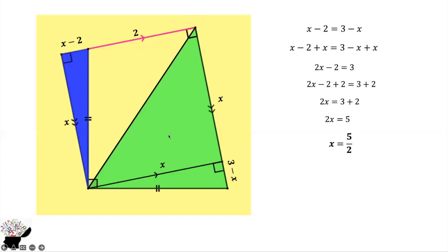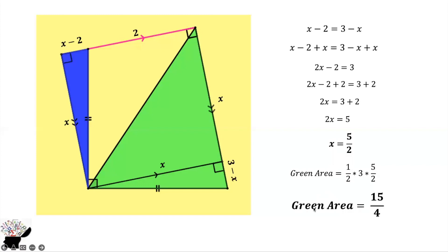The side length of the square is 5 over 2. Now we can find the area of the green triangle. Area equals half base times perpendicular height. The perpendicular height equals the side length of the square, which is 5 over 2. So the area is half times 3 times 5 over 2, giving us 15 over 4. Thank you for watching — please subscribe to my YouTube channel for more educational videos.